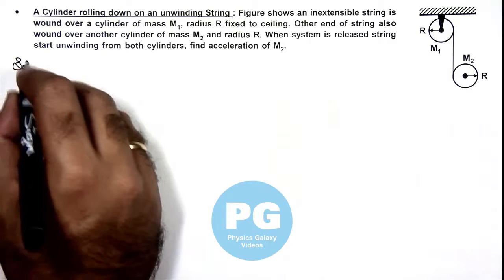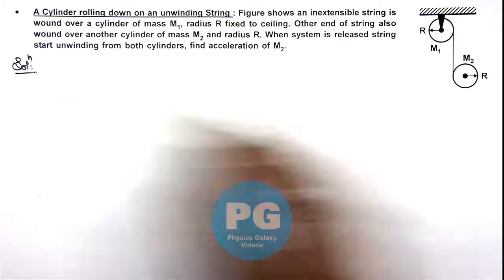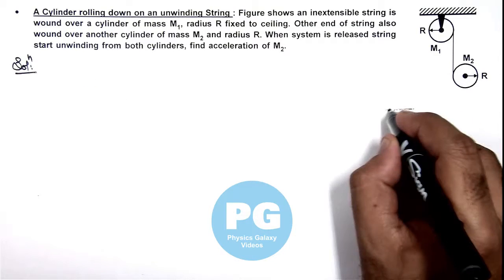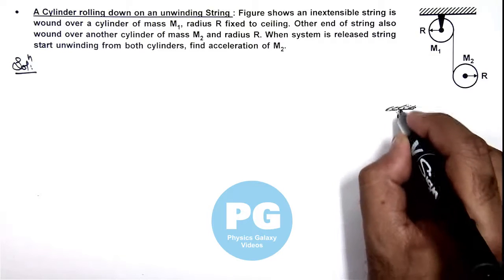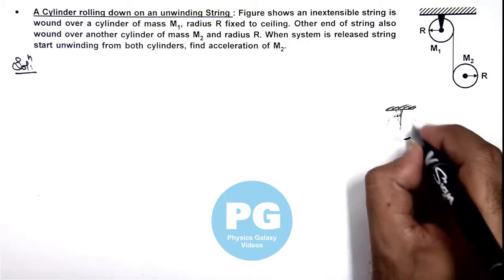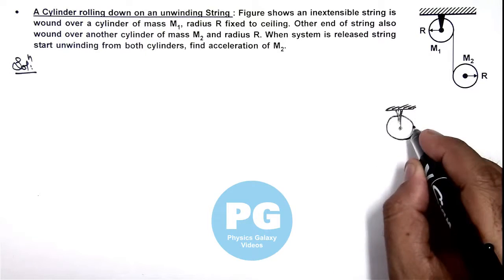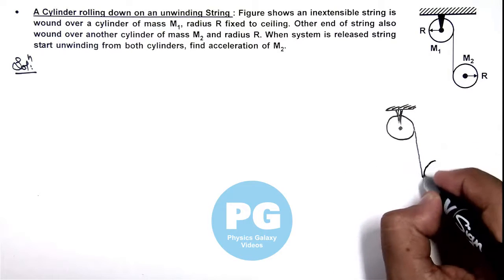So in this situation, if we redraw the figure for analysis, we can see this cylinder with string wound which is connected to another cylinder of mass m2.